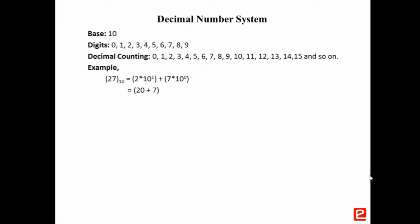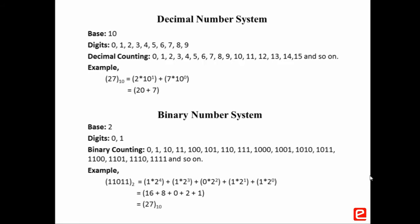Consider an example: 27 to the base 10, which is nothing but 2 into 10 to the power 1, plus 7 into 10 to the power 0, which is equal to 20 plus 7, equaling 27.